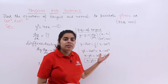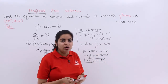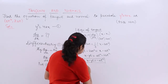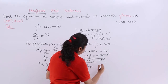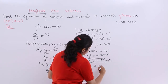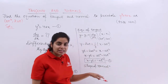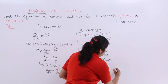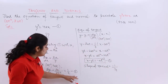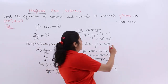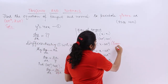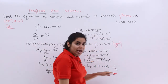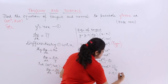Next, let's find the equation of the normal. To do that, we first find the slope of the normal, which is −1 divided by the slope of the tangent. From equation 2, the slope of the tangent is 1/t, so the slope of the normal is −t. Let's call this equation number 4.